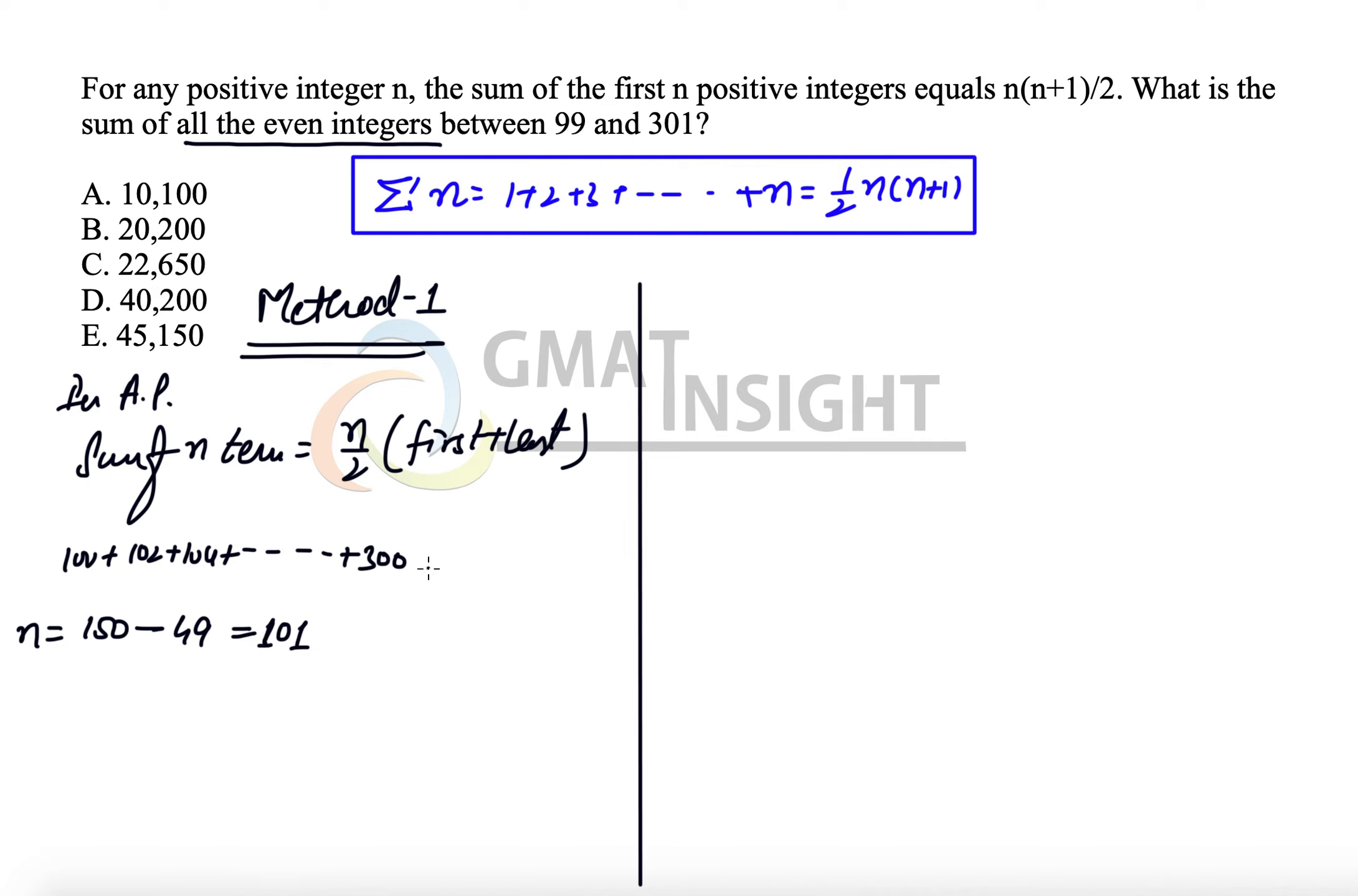Now that we have the number of terms, we can use the property: 101/2 times (first term 100 + last term 300) equals 101/2 times 400, which means 101 times 200, which equals 20,200. That's the answer, which is option B.